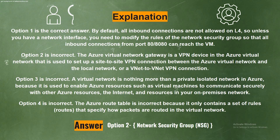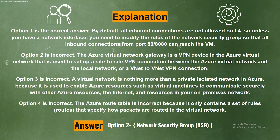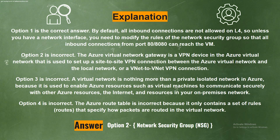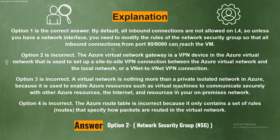Option 2 is incorrect — the Azure Virtual Network Gateway is a VPN device used to set up a site-to-site VPN connection between the Azure Virtual Network and the local network, or a VNet-to-VNet VPN connection. Option 3 is incorrect — a Virtual Network is a private isolated network in Azure used to enable Azure resources such as virtual machines to communicate securely with other Azure resources, the internet, and on-premises resources. Option 4 is incorrect — the Azure Route Table only contains a set of rules that specify how packets are routed in the virtual network.